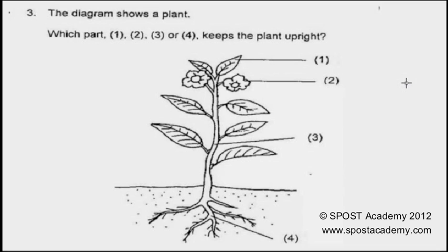We know that number 1 is the leaf. The leaf does not keep the plant upright — it only carries out photosynthesis. Number 2 is the flower, and it does not keep the plant upright either.